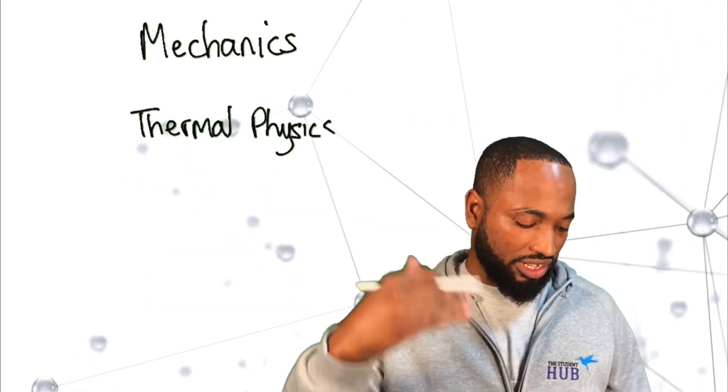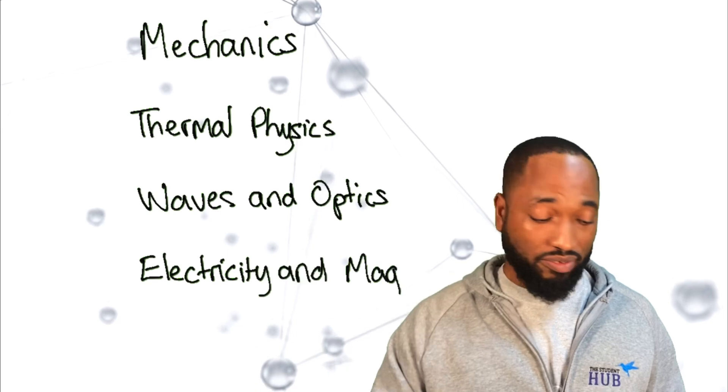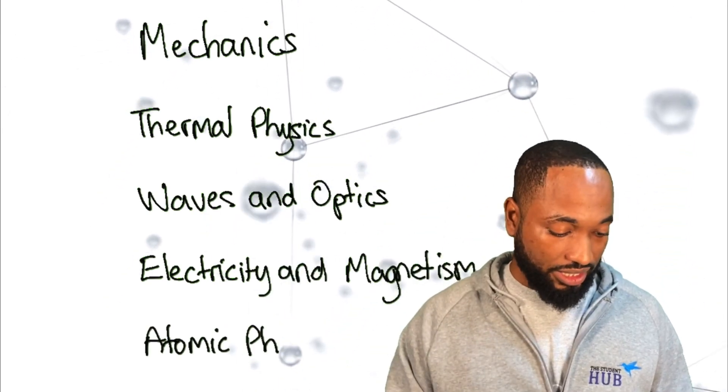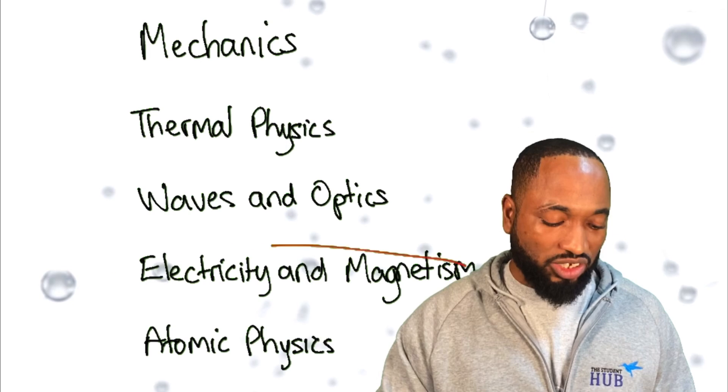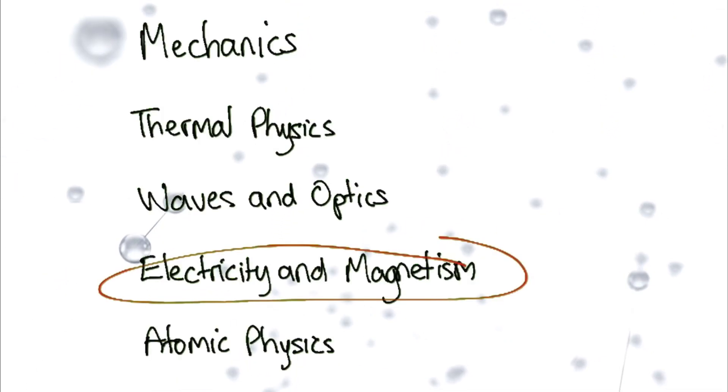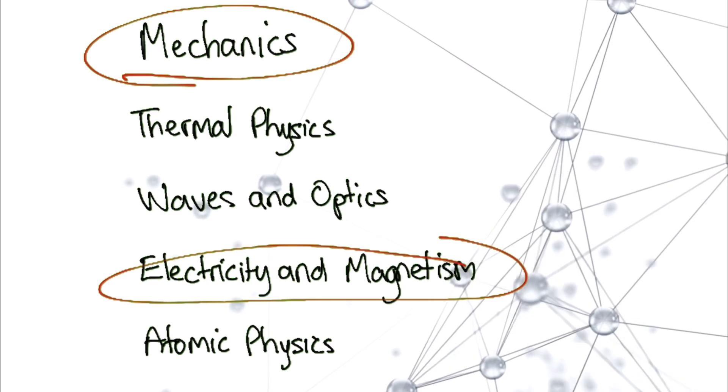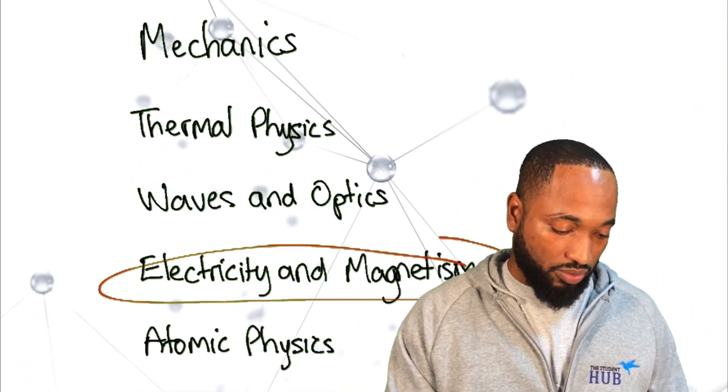Mechanics, thermal physics, electricity and magnetism, waves and optics, and atomic physics - those are the five topics in CSEC physics. Mechanics is one of the biggest, and electricity and magnetism may take the cake, but these two are by far the biggest. They cover over 50% of the syllabus, and we'll be looking at those.